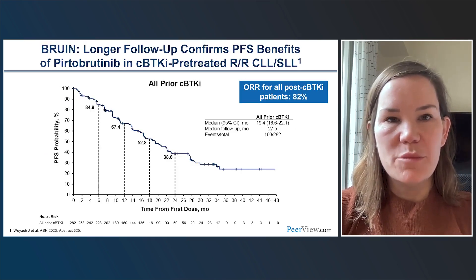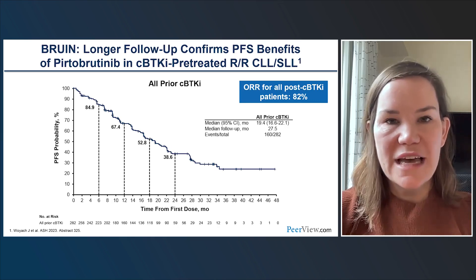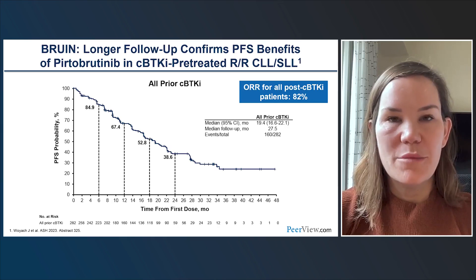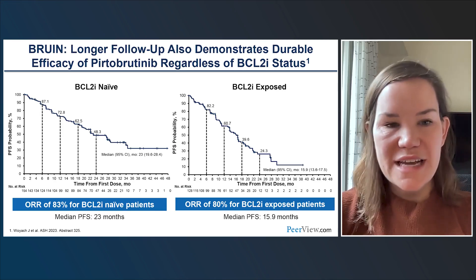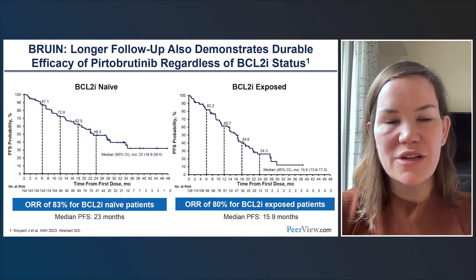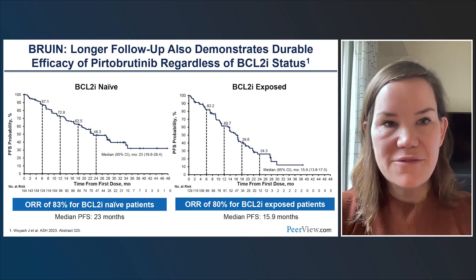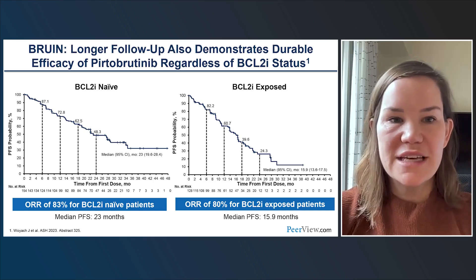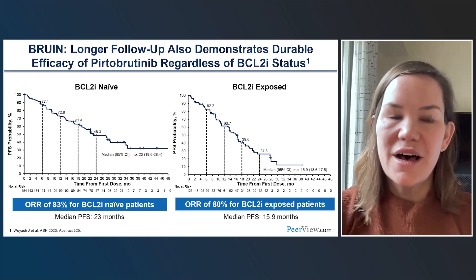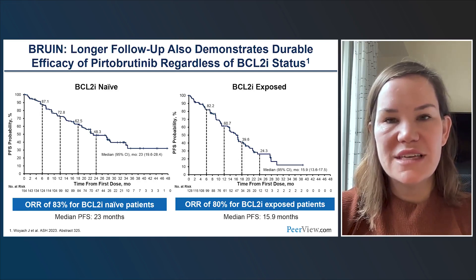Longer follow-up from the BRUIN trial confirms PFS benefits in covalent BTK inhibitor pretreated relapsed refractory CLL-SLL patients, with an overall response rate of 82% and a median progression-free survival of 19.4 months. A recent ASH presentation showed a differential in PFS between BCL-2 naive patients — approximately 23 months — versus BCL-2 previously exposed patients, with a median PFS of 15.9 months. Both groups had overall response rates around 80%.